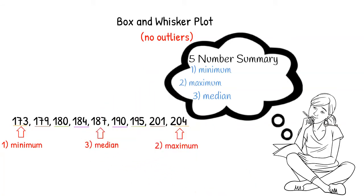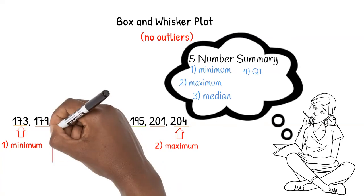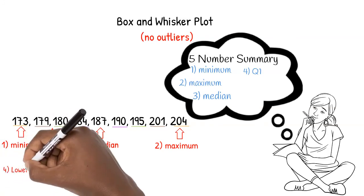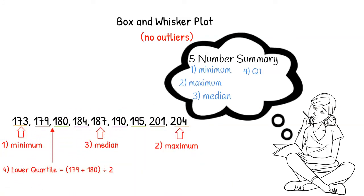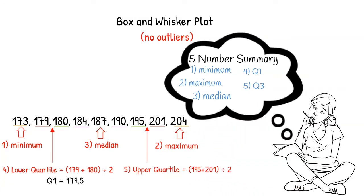Our next step was to find the lower quartile, also known as Q1. To do this, we found the median of the lower half of the values, ignoring the median. Since there are two numbers in the middle of the lower half, the lower quartile is the average of these two numbers. The lower quartile, Q1, is 179.5. We then found the upper quartile, also known as Q3. We found the median of the upper half of the values. Since there are two numbers in the middle, the upper quartile is the average of these two numbers. The upper quartile, Q3, is 198.